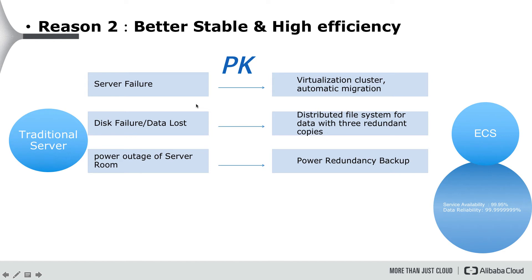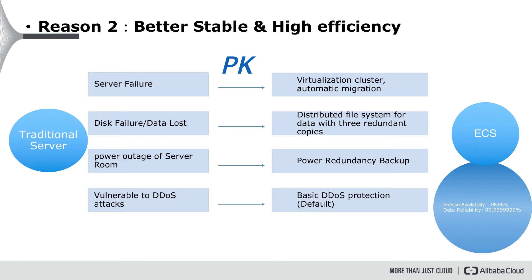Traditional servers may also encounter server room power outage situations. For ECS, Alibaba Cloud has set up power redundancy backup for all ECS servers. ECS also has basic DDoS protection enabled by default, and importantly, it's free. ECS instance provides 99.5% service availability and almost 100% data reliability, which definitely provides better stability and high efficiency than a traditional server.